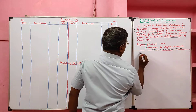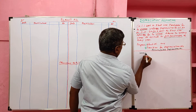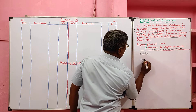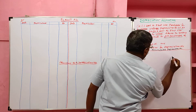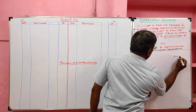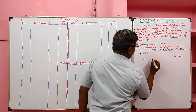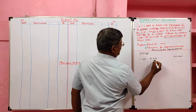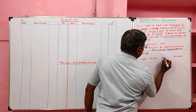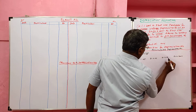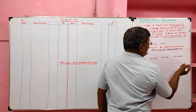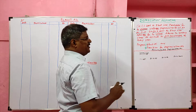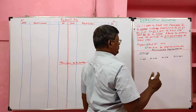Now we should do the workings. The plant was purchased on 1st January 2005 and sold on 30th June 2007. Every year accounts are closed on 31st December. So the first year closed on 31st December 2005, the second year on 31st December 2006. In the third year, the accounts were supposed to close on 31st December, but the plant was sold earlier on 30th June, so we close accounts up to 30th June.